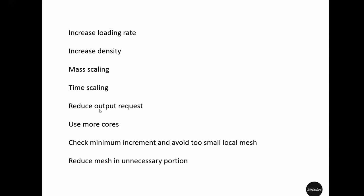We will also cover reducing the requested output in history and field output, using more cores in your processor, checking the minimum increment and avoiding too small local mesh, and finally reducing the mesh in unnecessary portions of your model.